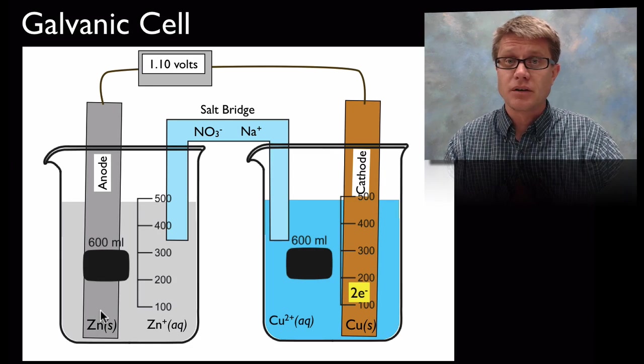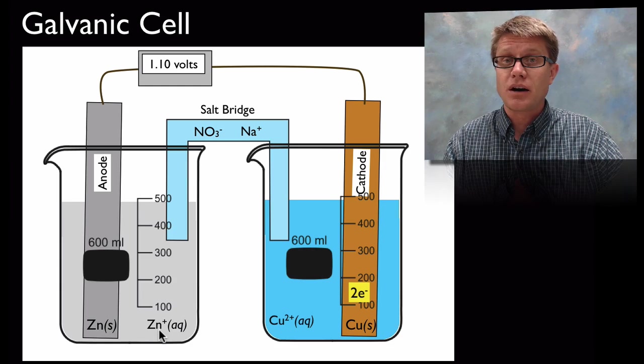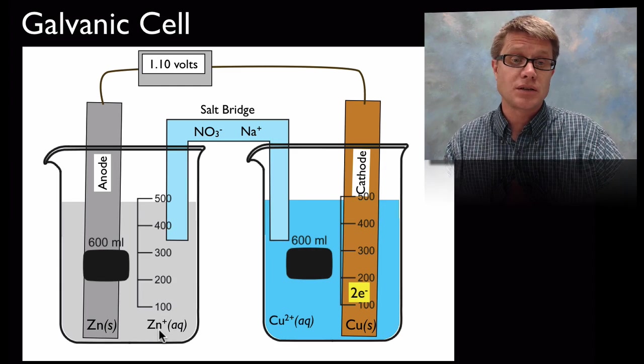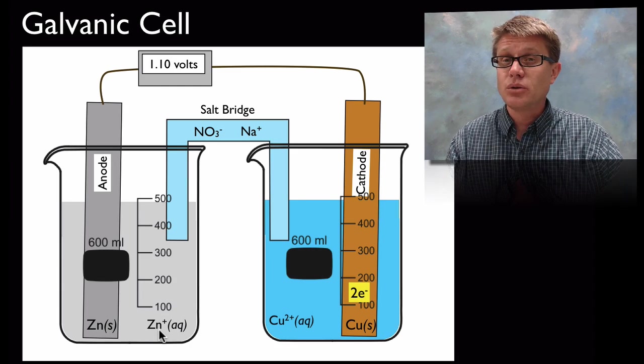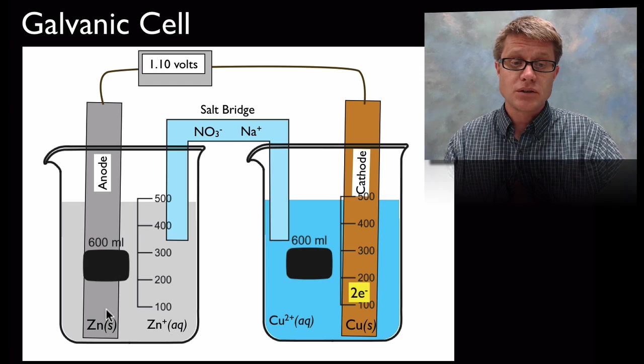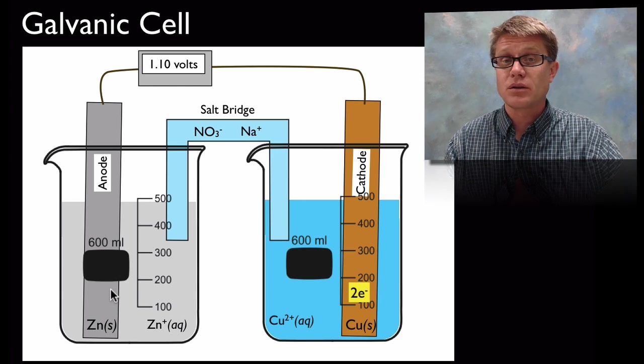And so let's talk about what's going on over here in the anode. This zinc metal, this zinc solid is actually moving off into an ion in the solution itself. As it does that it's losing those electrons. And so it's also losing mass. In other words this anode is going to lose mass over time.